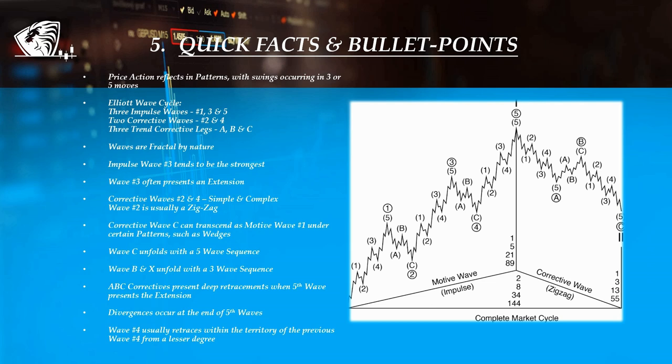Sometimes, on rare occasions, the C corrective wave can transcend into impulse wave 1. Wave C always unfolds with a 5 wave sequence. Wave B and wave X always unfold with a 3 wave sequence and are known to be the cause of market uncertainty, fake breakouts or even structure change.